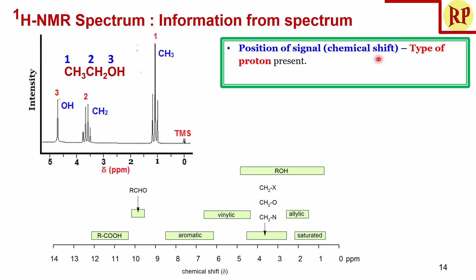The position of the signal gives the chemical shift, which tells us what type of proton is present. A chemical shift chart from 0 to 14 ppm is used. Methyl (saturated protons) appears between 1 and 2 ppm. Hydroxyl groups appear between 4 and 5 ppm. Methylene groups attached to oxygen appear between 3 and 4 ppm. Based on these positions, we can identify the type of proton present in the molecule.